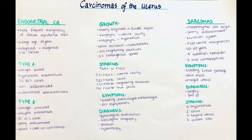Type 2 is the estrogen-unrelated type. It originates from atrophic endometrium and makes up only around 10–15% of cases. This type is more often poorly differentiated and therefore has a worse prognosis. It includes uterine serous carcinomas and clear cell carcinomas.